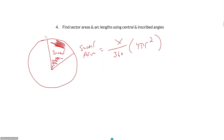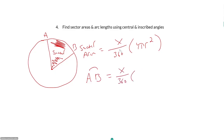If we want to find an arc length — say we want to find the length of arc AB — that is just going to be a portion of our circumference. It's the same portion as before: central angle over 360, but now times our circumference. So arc length equals (central angle / 360) × 2πr.